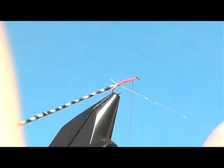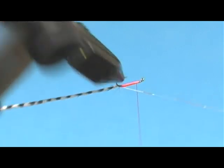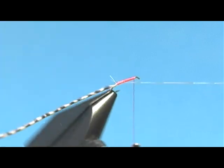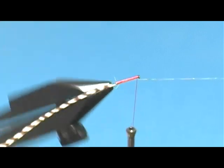Now I'm going to take this flash and just wind it on, spiraling it, kind of like a ribbing, but pretty close together because I want this to shine through the hackle.